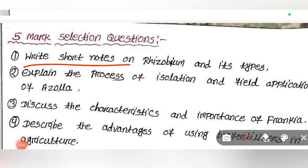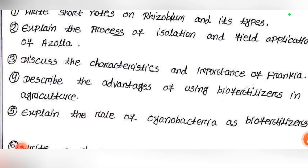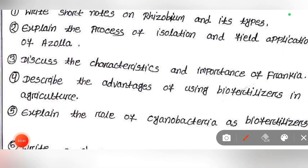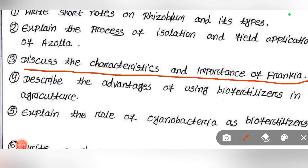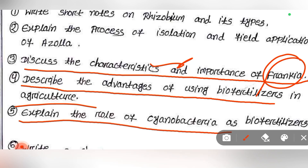Then write short notes: Rhizobium and its types, then explain the process of isolation and field application of Azolla, discuss the characteristics and importance of Frankia, describe the advantages of using bio-fertilizers in agriculture, and explain the role of cyanobacteria as bio-fertilizers.